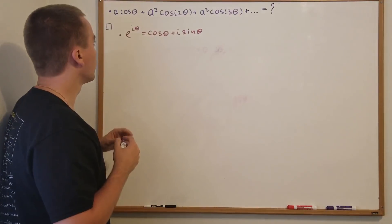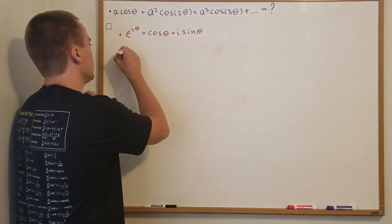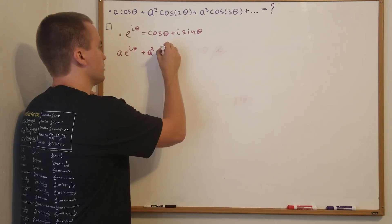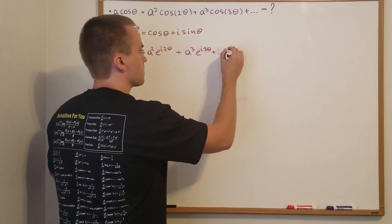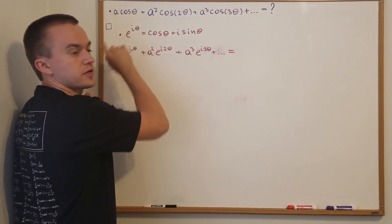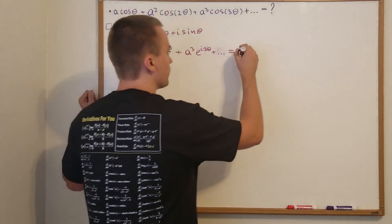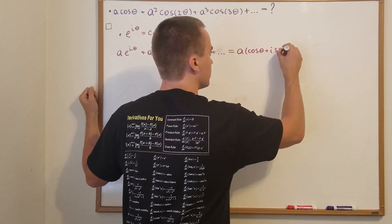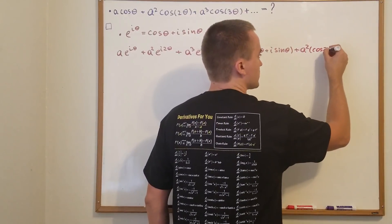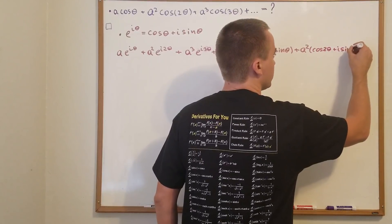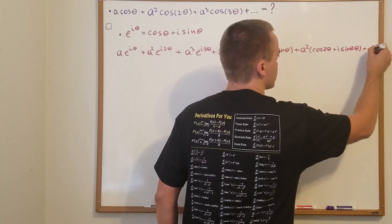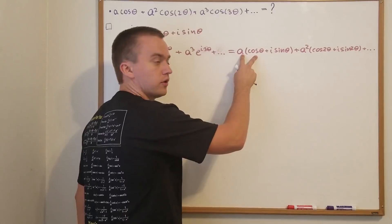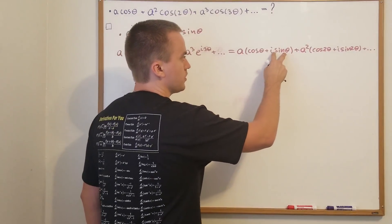We're going to consider another series: A·e^(iθ) plus A²·e^(i2θ), and so on. We'll use the definition of the exponential and rewrite each term as cosine plus i sine. So we get A·(cos θ + i sin θ) plus A²·(cos 2θ + i sin 2θ), and so on. We can see that this series is going to split into two series — one with the real part and one with the imaginary part.